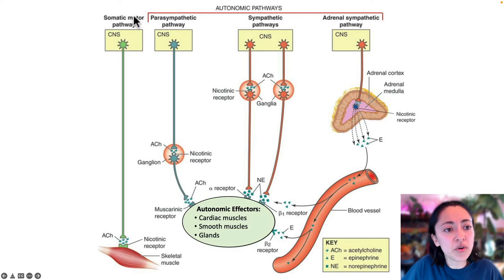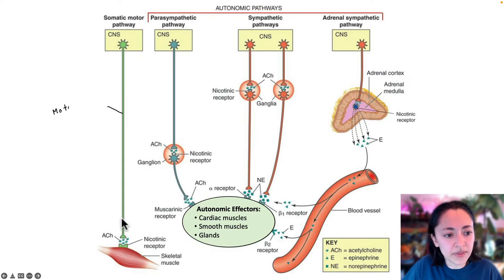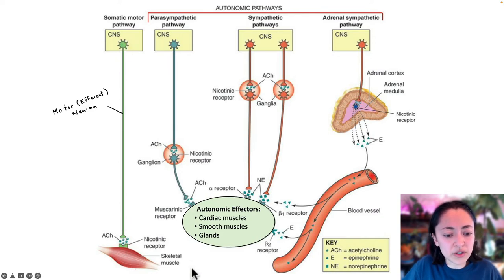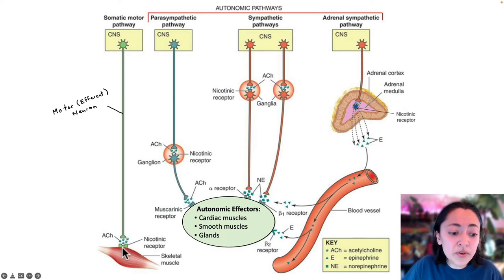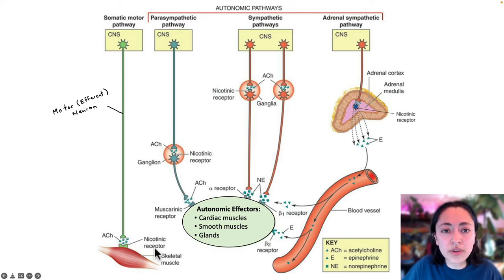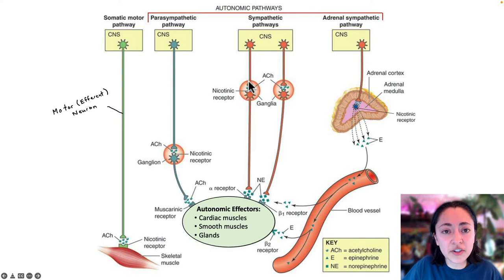Now let's look at the types of receptors involved in these motor pathways. The somatic motor pathway involves a single efferent neuron sending a motor command to skeletal muscles. Acetylcholine is always the neurotransmitter involved, and the receptor that's always involved is called a nicotinic receptor. Nicotinic receptors are also located in all the autonomic ganglia of the autonomic motor pathways — anywhere the preganglionic neuron communicates with the postganglionic neuron, acetylcholine and nicotinic receptors are always involved.